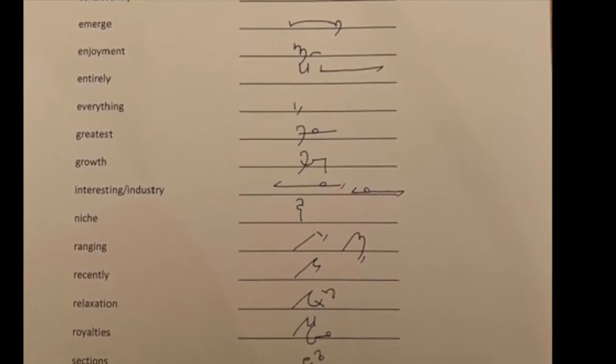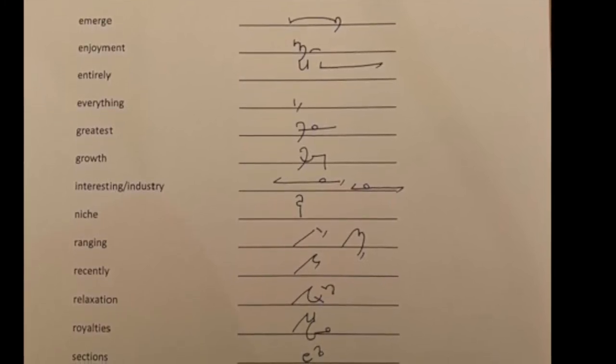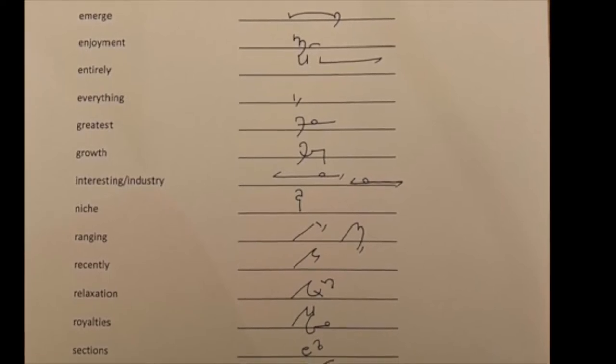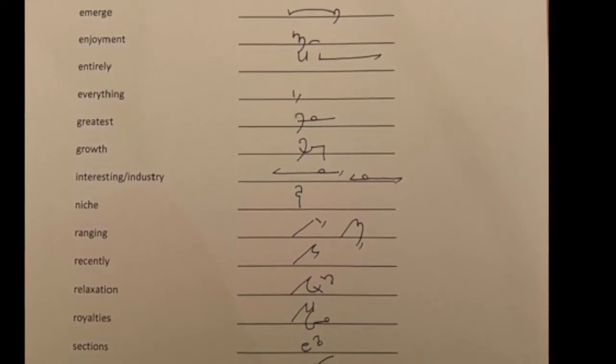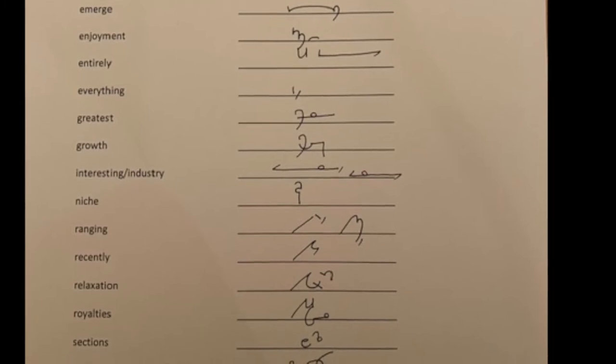Recently is a special outline. Relaxation has the final SHUN. The vowel, A in this case, can be written before it or it can be omitted.